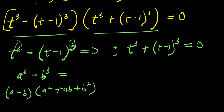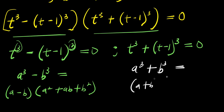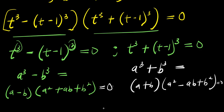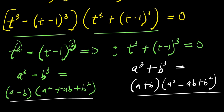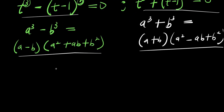And for the sum of cubes: a³ plus b³ equals (a plus b)(a² minus ab plus b²), and this equals 0. We are going to make use of these identities to expand both expressions. Let's start with the first one.